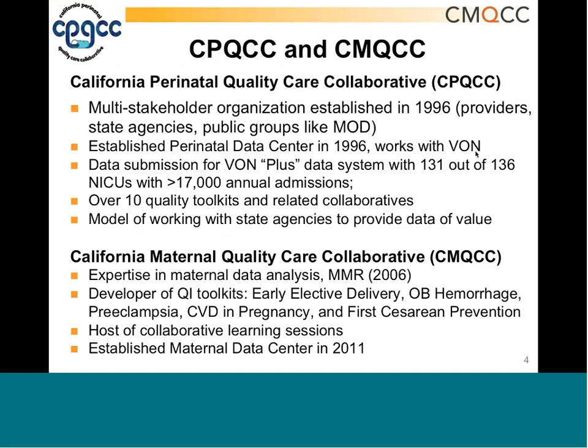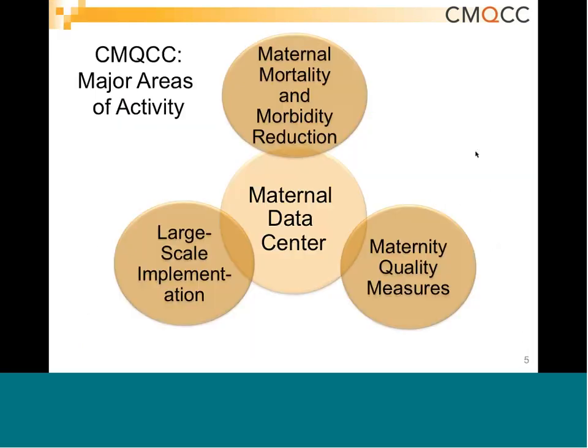CPQCC and CMQCC are the oldest perinatal quality collaboratives in the country. CPQCC was founded in 1996, focused largely on NICU quality improvement projects. Then in 2006, the state of California asked us to form a sister collaborative for maternal focus for addressing maternal mortality and severe maternal morbidity. We've developed toolkits for early elective delivery — with the March of Dimes — OB hemorrhage, preeclampsia, and most recently supporting vaginal delivery for cesarean prevention. We also do a host of quality improvement collaboratives and are focused on data quality improvement.